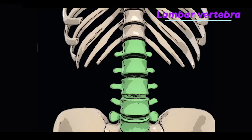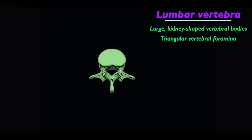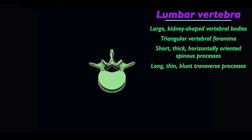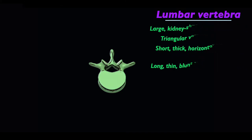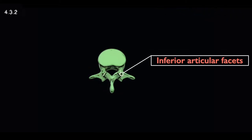Lumbar vertebrae have large kidney-shaped vertebral bodies and triangular vertebral foramina when viewed from above, and spinous processes that are short, thick, and horizontally oriented. Their transverse processes are long, thin, blunt, and consist of accessory processes. The superior articular processes consist of mammillary processes and posterior medially facing articular facets, while the inferior articular processes consist of anterior laterally facing articular facets.